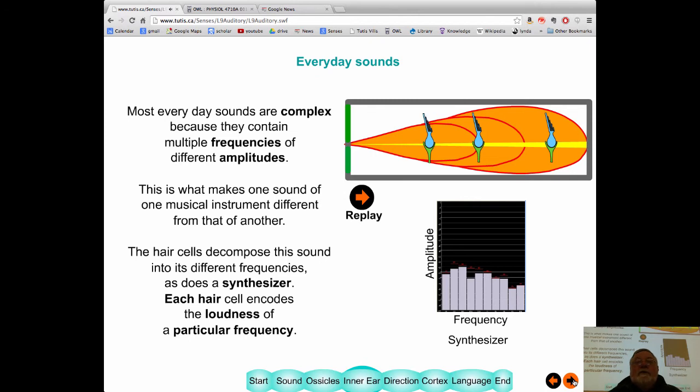And what happened there is the vibration got large for the loud sound and small for the soft sound. So, frequency, it's which one's firing. Loudness is the amount of action potentials, how frequent those vibrations are. So loudness is by frequency.